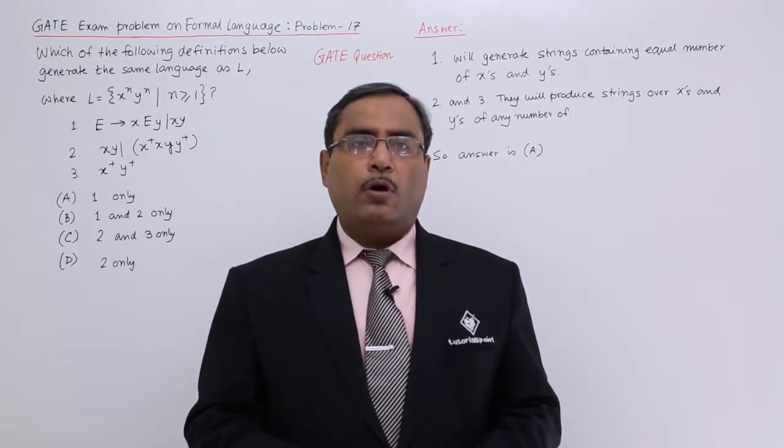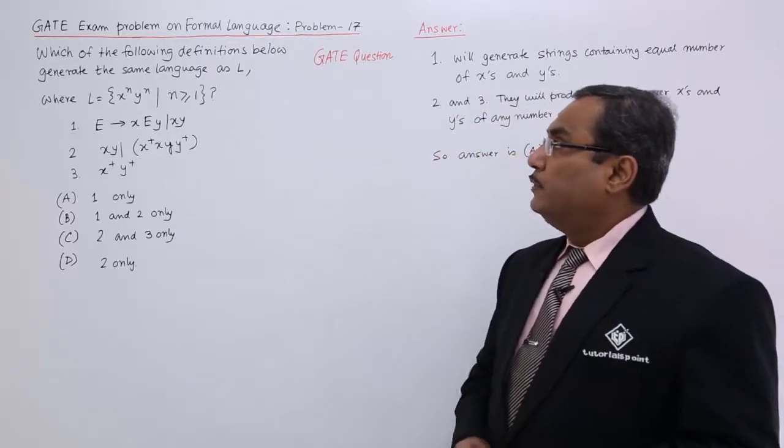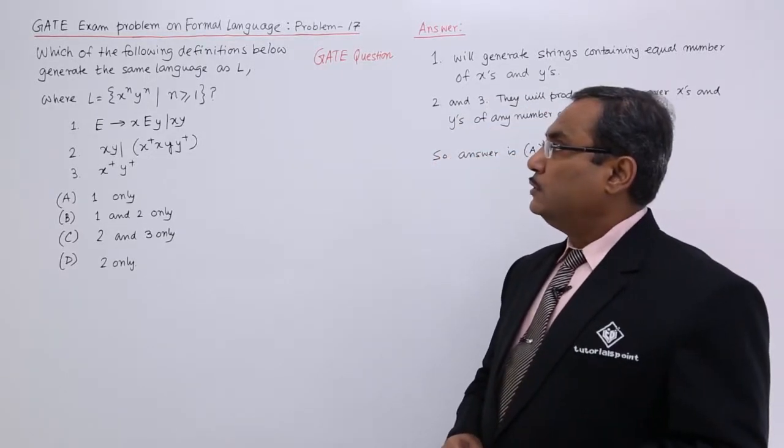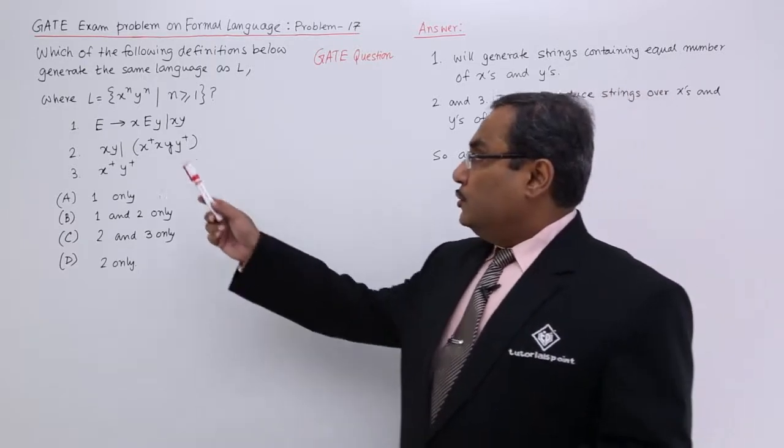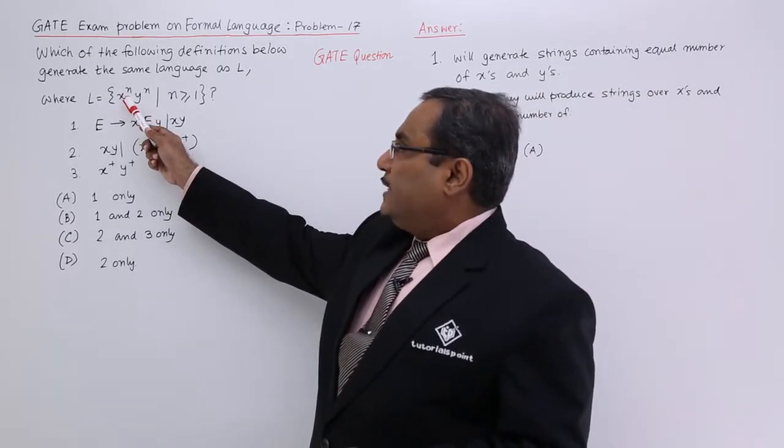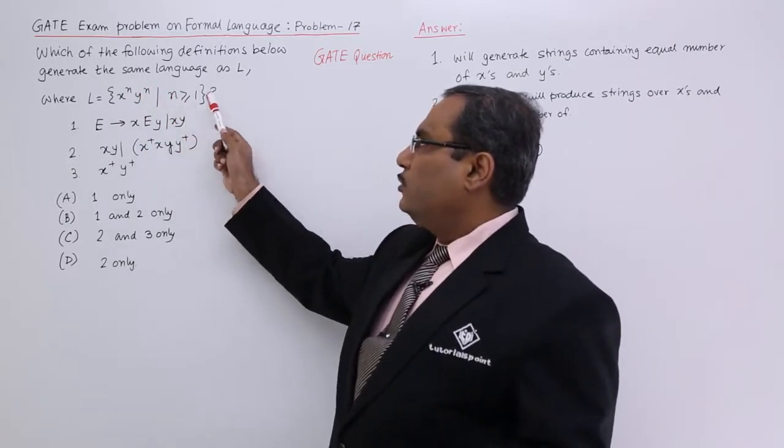Let us solve another GATE problem on formal language. Here is the problem: which of the following definitions below generate the same string as L? Just look at this particular L. It is x to the power of n, y to the power of n, where n is greater than or equal to 1.